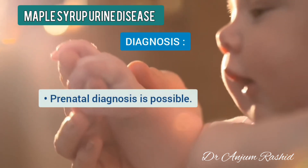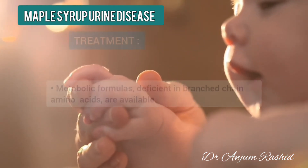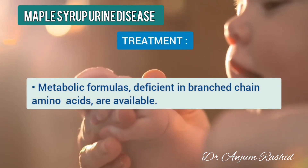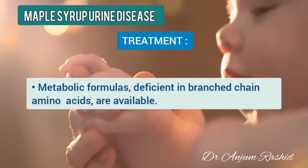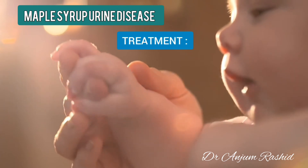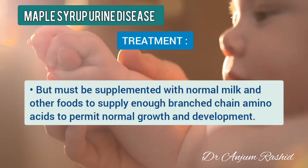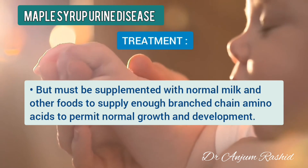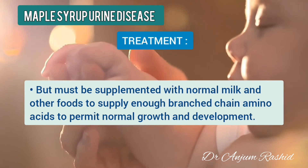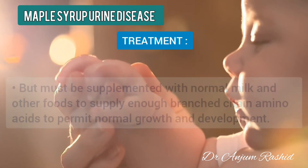Prenatal diagnosis is also possible. Regarding treatment, metabolic formulas deficient in branch chain amino acids are available but must be supplemented with normal milk and other foods to supply enough branch chain amino acids to permit normal growth and development.